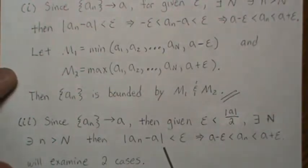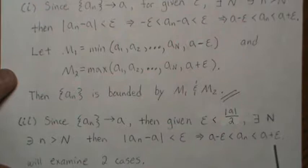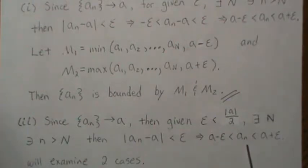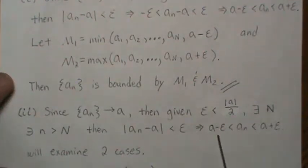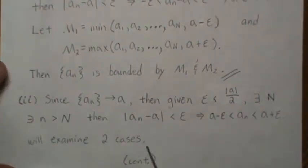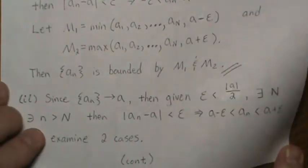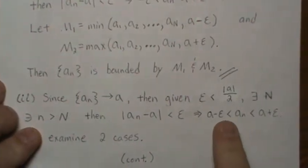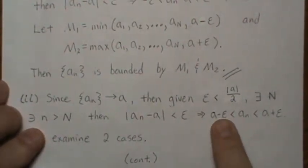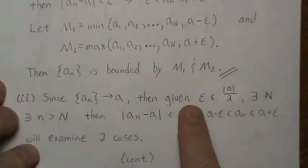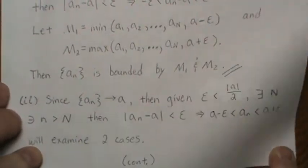That implies, like what we did up there, that An is always between these two numbers for when little n gets above capital N. Now we're going to examine two cases — technically you don't need it, but I think it's easier to see, so that's why I'm going to do two cases. Remember this setting, and that epsilon is always less than the absolute value of A over 2.